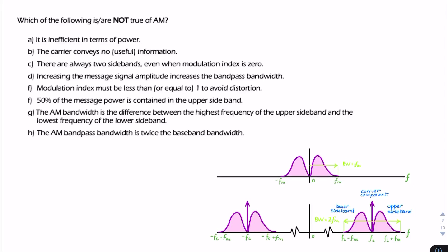Here we have a number of statements about AM, and we're asked which of them is false. There could be one or more false statements. The first one says AM is inefficient in terms of power. When we talk about AM, we're talking about full AM, which is DSB with a large carrier. For DSB with a large carrier, the power efficiency is less than 33%, so it's very inefficient. So statement A is true — AM is inefficient.